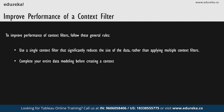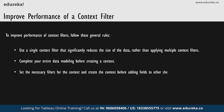Next, complete all your data modeling before creating a context — changes in the data model such as converting dimensions to measures will require recomputing the context, which slows performance. Also, set the necessary filters for the context and create the context before adding fields to other shelves, which makes subsequent queries much faster. If you want to set a context filter on a date, you can use continuous date; discrete date bins like year of date are usually very effective. Note that if your data is heavily indexed, context filters may not provide the best performance improvement and could actually cause slower query performance. Context filters can also adversely affect query performance when you use the 'Assume Referential Integrity' option in the data menu.